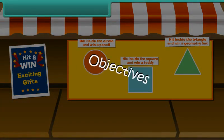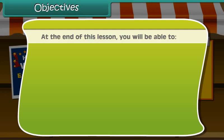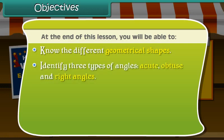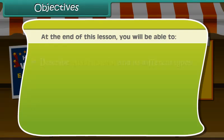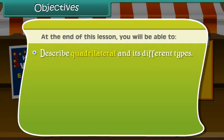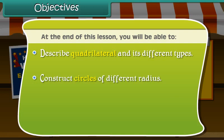Objectives. At the end of this lesson, you'll be able to know the different geometrical shapes, identify three types of angles: acute, obtuse and right angles, differentiate between open figures and closed figures, explain triangle and its types, describe quadrilateral and its different types, construct circles of different radius, and draw the different geometrical figures.